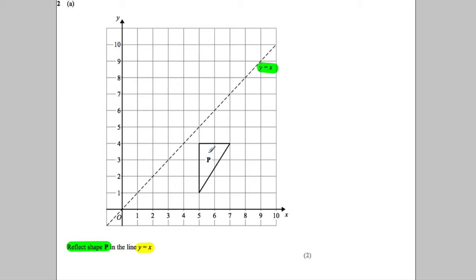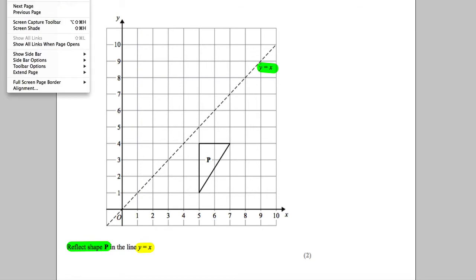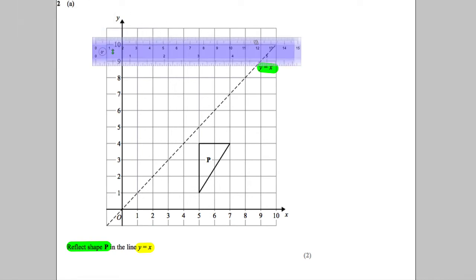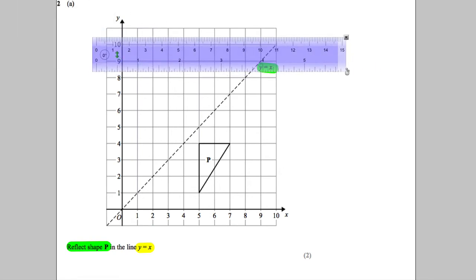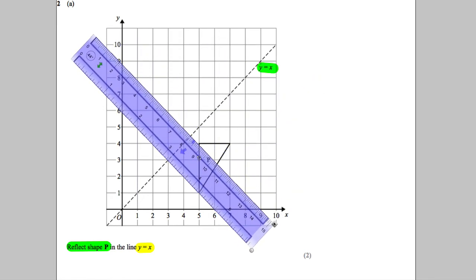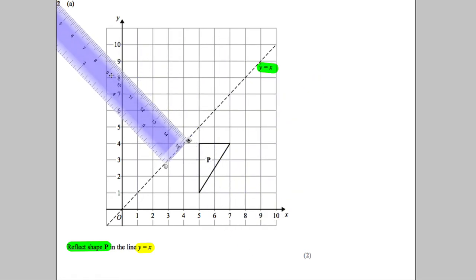Now I find it quite easy if I got a ruler out. So if I got a ruler out, okay, and what I do is I turn the ruler so that it's exactly perpendicular to that line there.